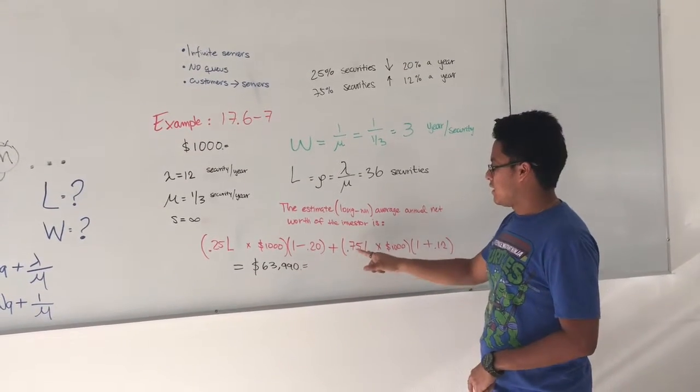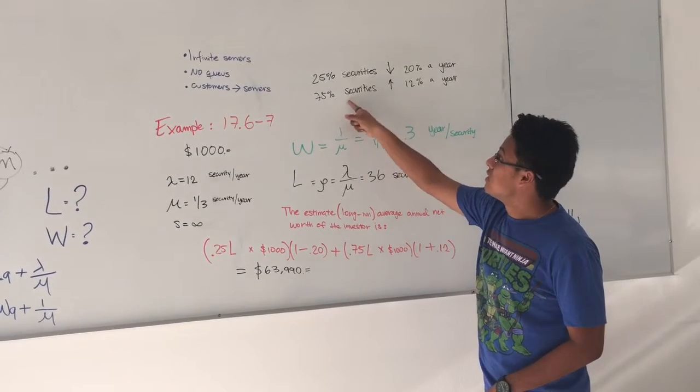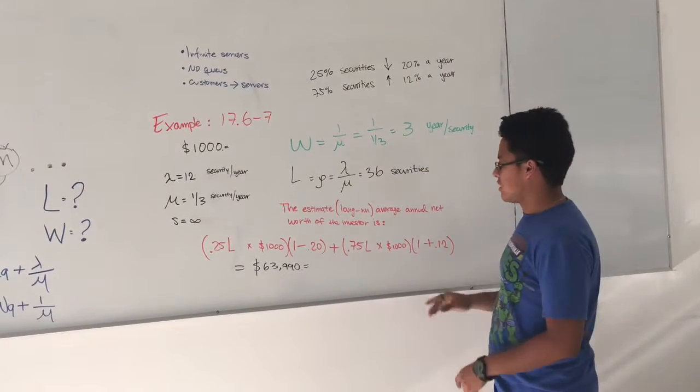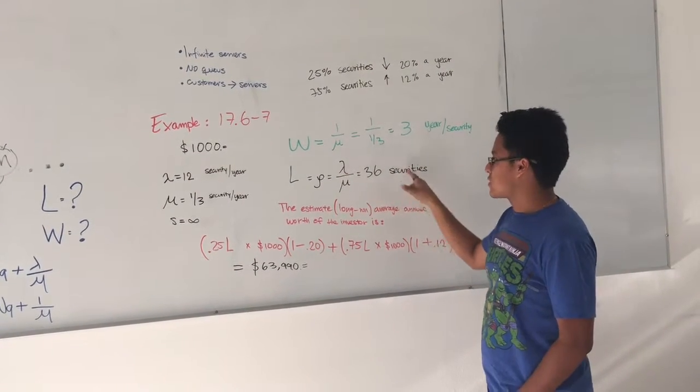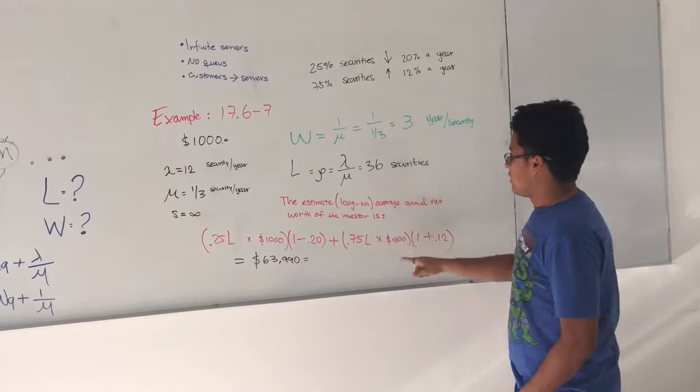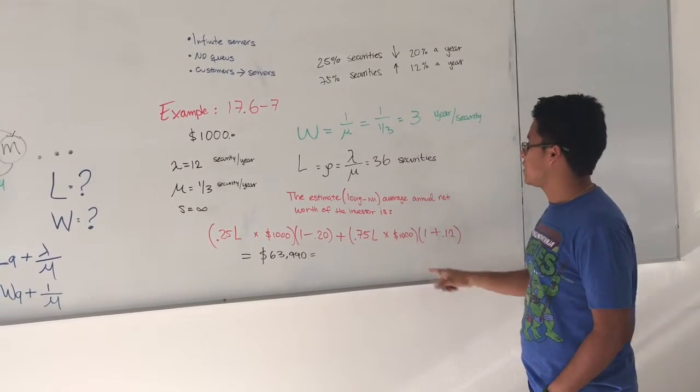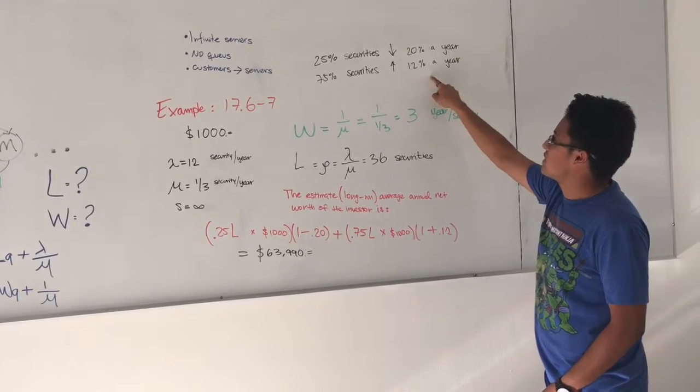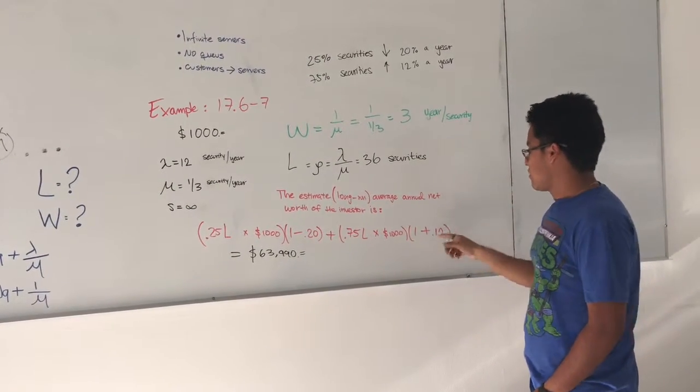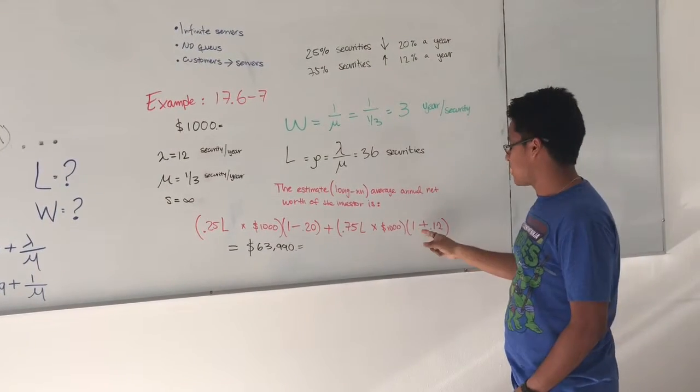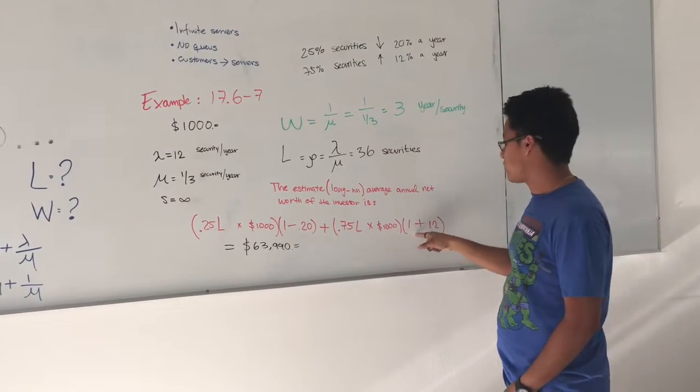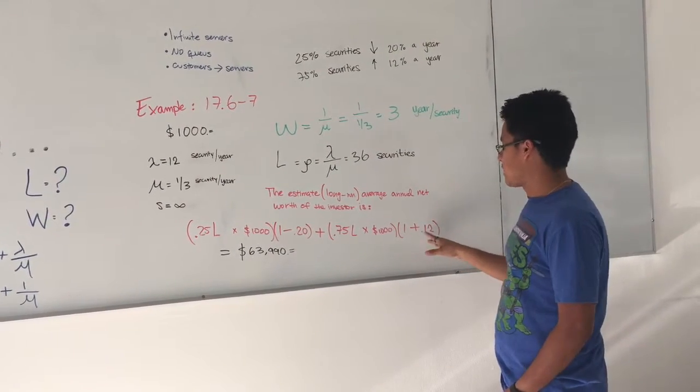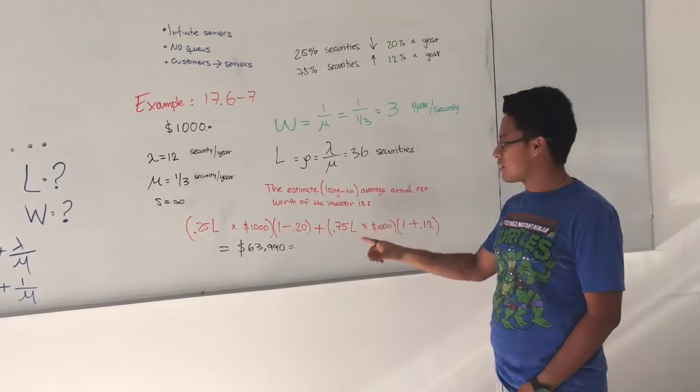We are going to add the 0.75 left percentage in the actions times the number of actions you do have, that is 36 again, times the cost per unit, and we are going to multiply this by the 12% that is increasing. In this case, because these actions are increasing, we are going to add it to 1. So you are going to have 1.12 worth of the value that the actions you have.